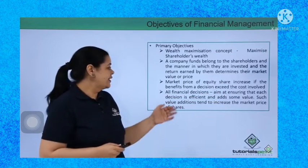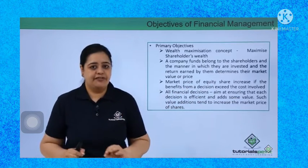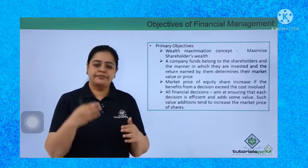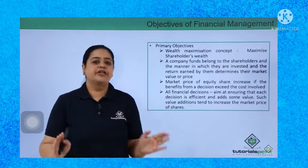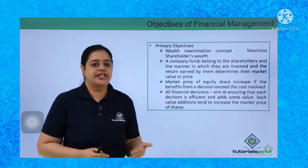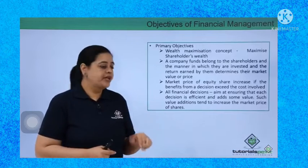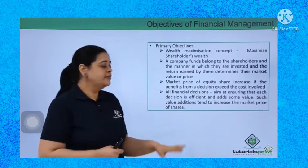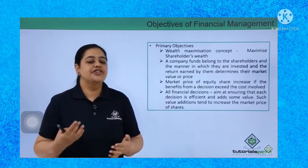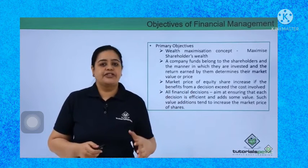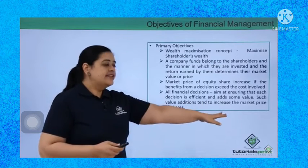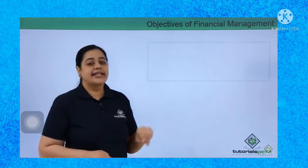The market price of an equity share will increase if the benefit from a decision exceeds the cost involved. For example, if the company issues new shares, shareholders invest, the money is put into a project, and the company makes profits — the profits exceed the cost involved, so the market price of the equity share will jump. All financial decisions made in the firm should aim at ensuring each decision is efficient and adds value to the company. Decisions should not deplete capital or profits but should always add value, which will help in increasing the market price of shares.